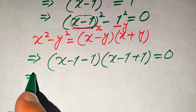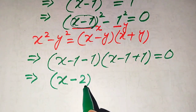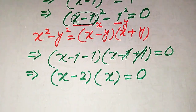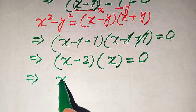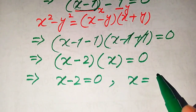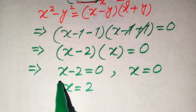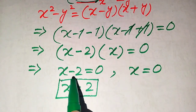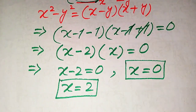We simplify by combining like terms: minus 1 minus 1 becomes minus 2, and the positive and negative 1s cancel to give just x. So the equation becomes (x minus 2)(x) equals 0. Splitting into two cases: the first case gives x minus 2 equals 0, so x equals 2; and the second case gives x equals 0.